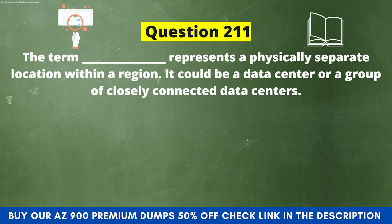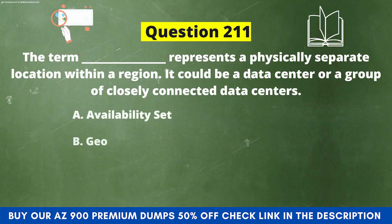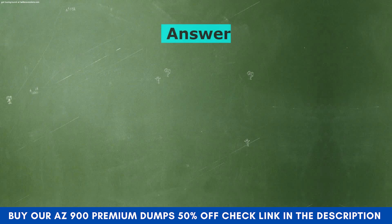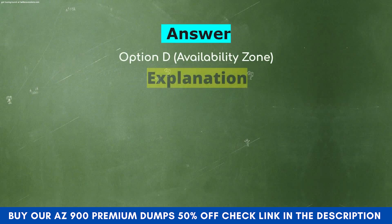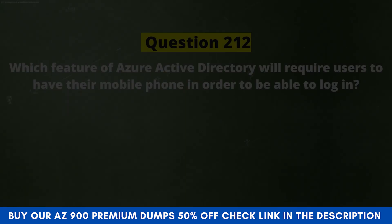Question 211: The term blank represents a physically separate location within a region — it could be a data center or a group of closely connected data centers. Option A: Availability Set. Option B: Geo. Option C: Region Pair. Option D: Availability Zone. The correct answer is Option D, Availability Zone. Azure Availability Zones are physically separate locations within each Azure region that are tolerant to local failures. Failures can range from software and hardware failures to events such as earthquakes, floods, and fires. Tolerance to failures is achieved through redundancy and logical isolation. A minimum of three separate availability zones are present in all availability zone-enabled regions.